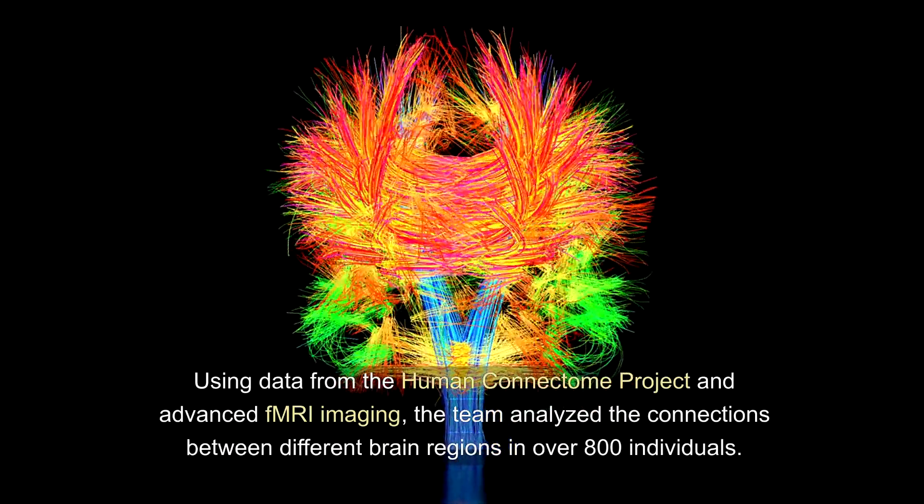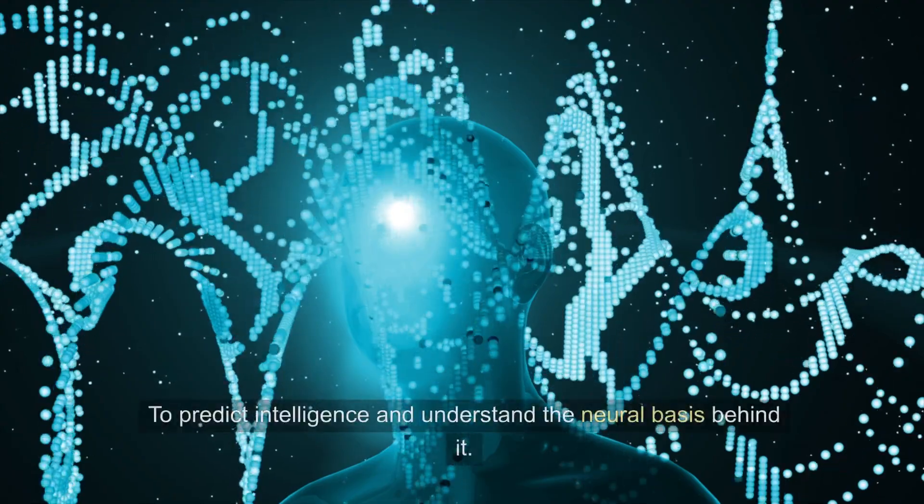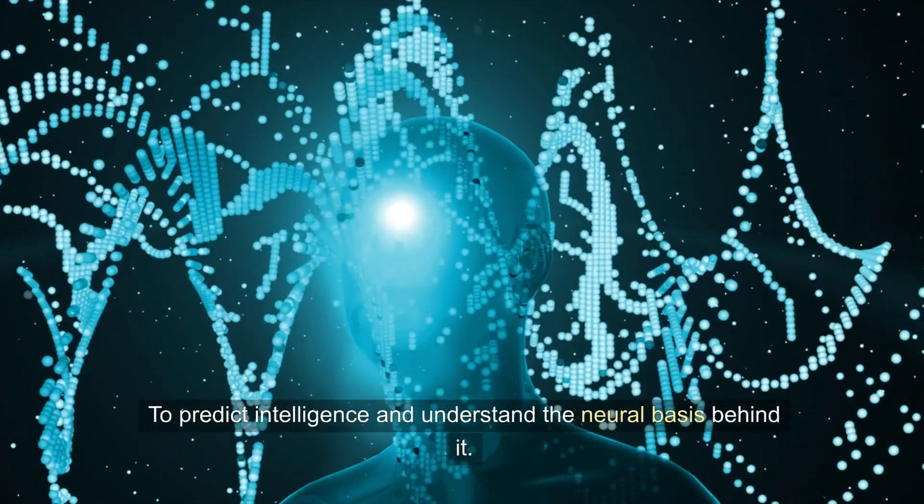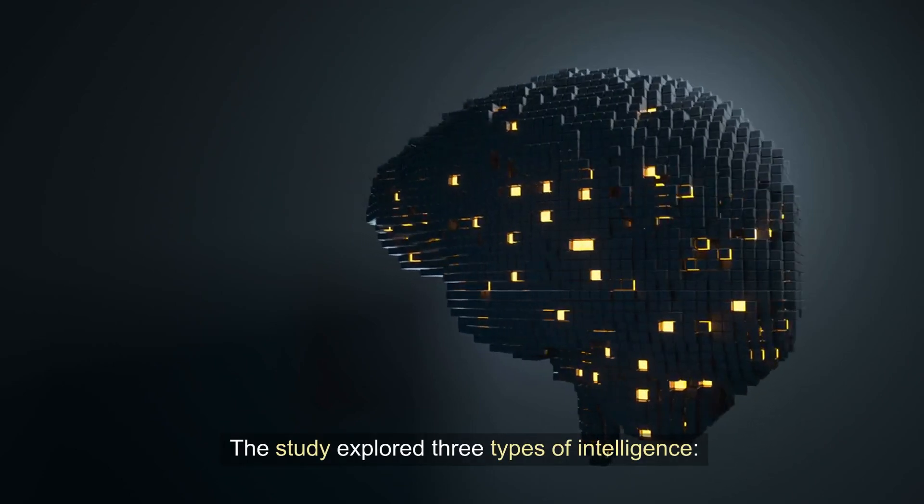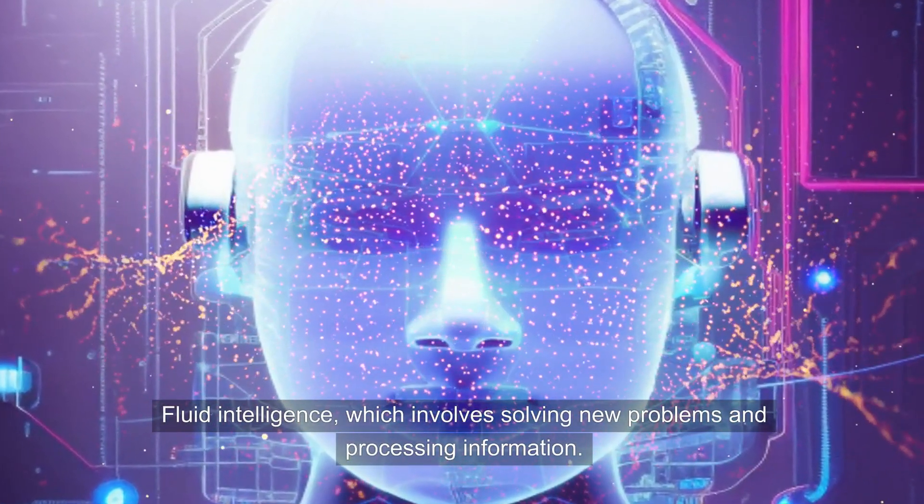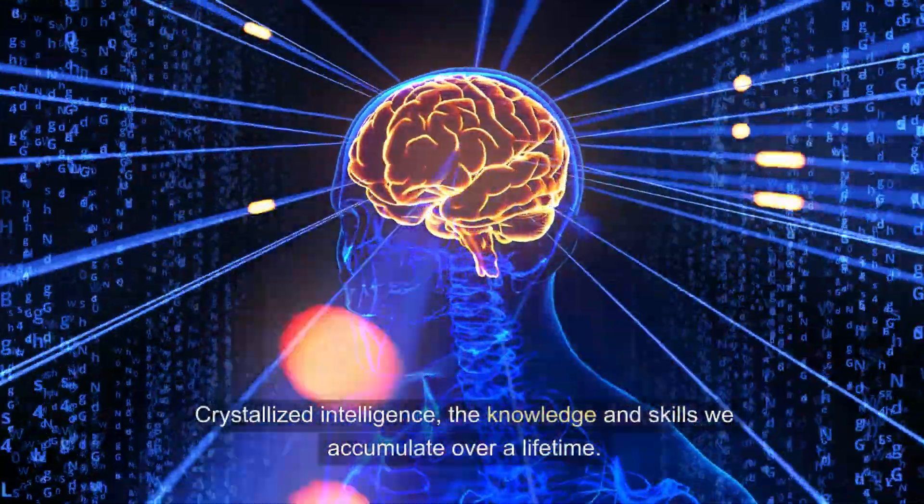connections between different brain regions in over 800 individuals. Their goal: to predict intelligence and understand the neural basis behind it. The study explored three types of intelligence—fluid intelligence, which involves solving new problems and processing information; crystallized intelligence,